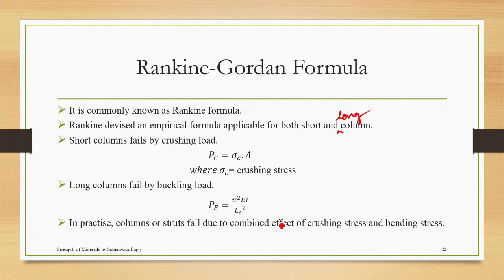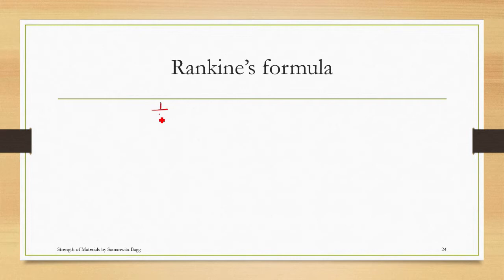So let's discuss about Rankine formula. The formula given by Rankine is 1 upon PR—this PR stands for Rankine load—is 1 upon PC plus 1 upon PE. Now let's take an LCM, so this becomes PE plus PC upon PC into PE. This is 1 upon PR, so therefore PR will be PC into PE upon PE plus PC. I just take an inverse over here.